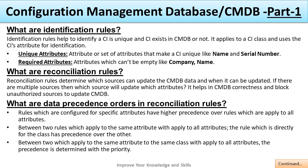What is the data precedence order in reconciliation rules? Rules configured for a specific attribute have higher precedence over rules applied to all attributes. Between two rules applying to the same attribute, the rule directly for the class has precedence over others. Between two rules applying to all attributes for the same class, precedence is determined by priority.